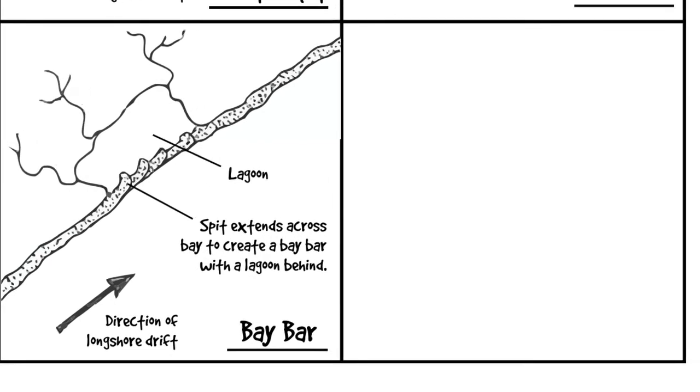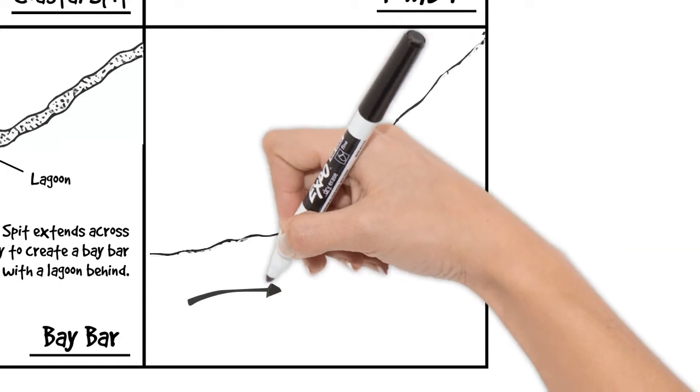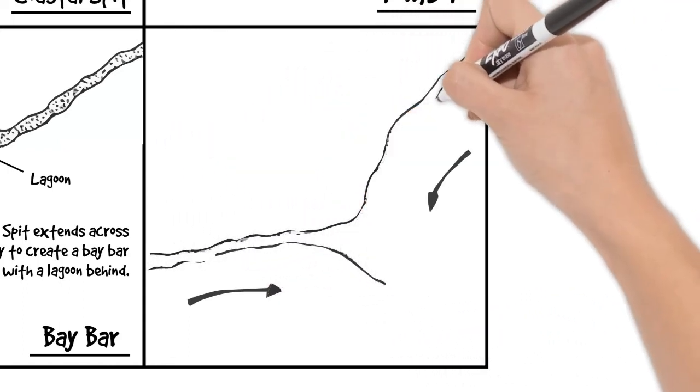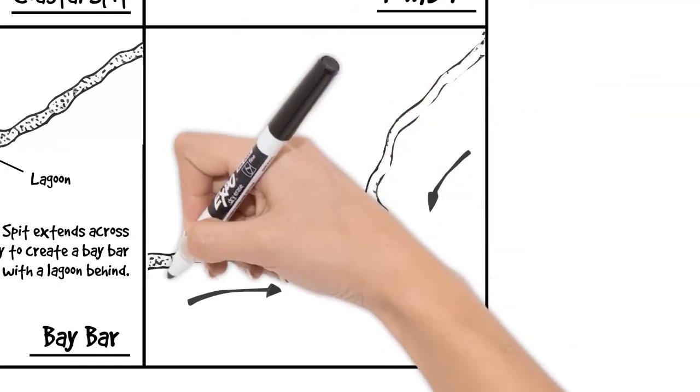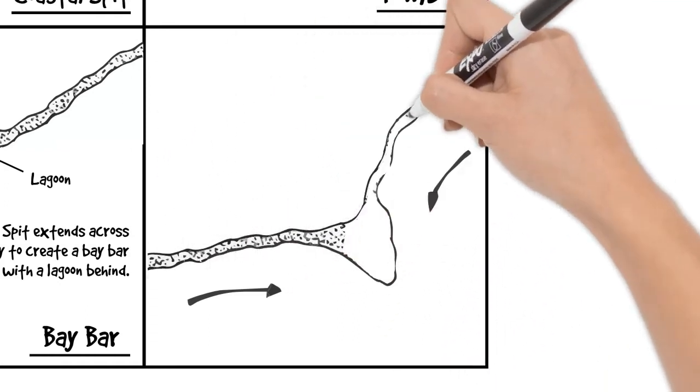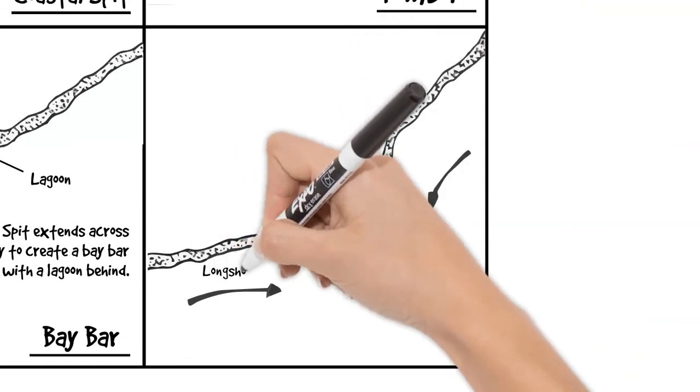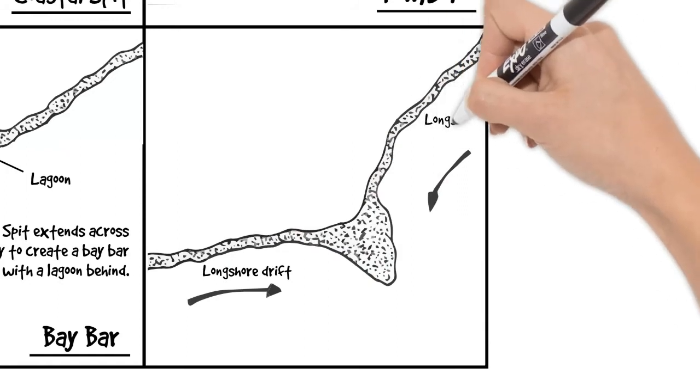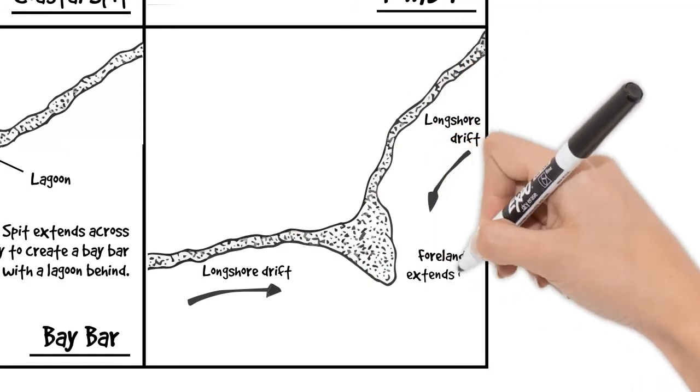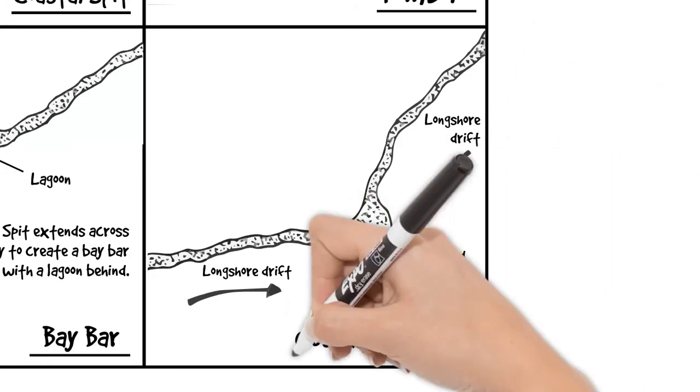The final feature is a cuspate foreland. This occurs where longshore drift operates in two directions. So there's a change in the coastline that allows sediment to be built up against each other, coming from different directions. As a result, the foreland extends out into the sea, as it does at Dungeness. Label longshore drift and make sure we're labelling that the foreland is extended out into the sea.